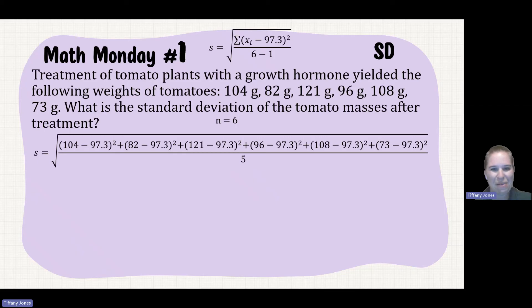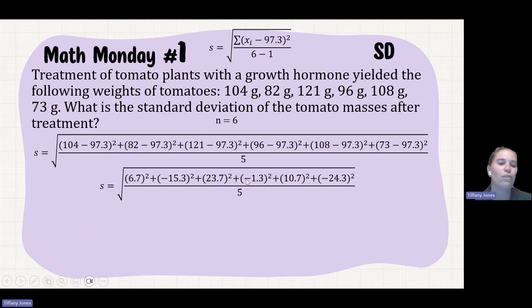So if I sub all that into my formula, as I said, this is my Xi, so each of my values is gonna get subbed into the equation. So I'll take each of those individual values minus my mean and I'll divide it by five. So you want to square them, so 6.7 squared, because that was 104 minus 97.3.